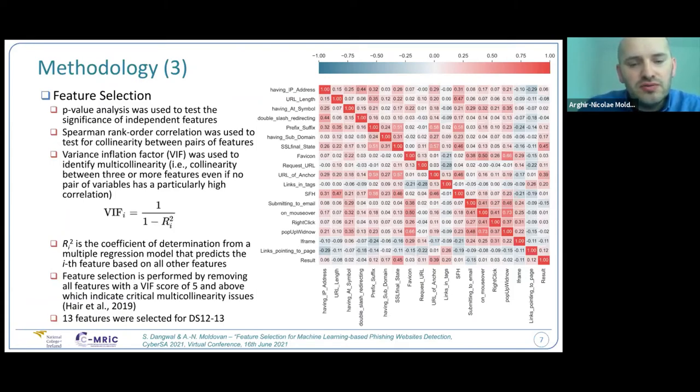How is it computed? So basically you do multiple regression model where you predict one feature based on all the other features. And then you repeat the process for all the different features. And then you do a stepwise approach in the sense that you remove one feature with the highest VIF score at each step. And then you reiterate the process. The feature selection was performed by removing all the features with a VIF score of 5 and above, which indicate critical multicollinearity issues. Some other works also, a score of 5 will correspond to an R-squared of over 80 or 0.8, which means that 80% of the variance of the feature that we want to predict is explained by the other features.